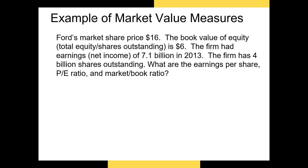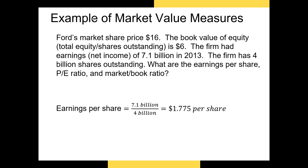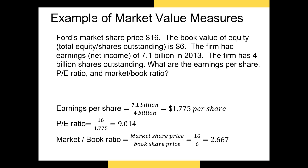Let's take a look at an example. Ford's market share price is $16. The book value of equity divided by shares outstanding is $6 — that's our book price per share. The firm had earnings of $7.1 billion in 2013 and 4 billion shares outstanding. EPS is net income divided by number of shares outstanding, giving us 1.775, which we normally round to 1.78. Our PE ratio is 16 divided by 1.775 — this would be our trailing PE ratio, since we're using historical net income — giving us 9.014. Finally, our market-to-book ratio is the market share price of $16 divided by the book share price of $6, giving a market-to-book ratio of 2.667, which is relatively high.